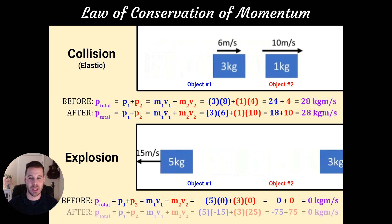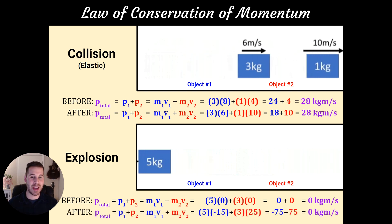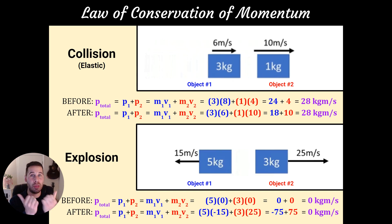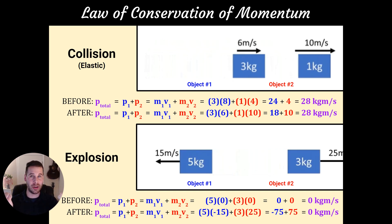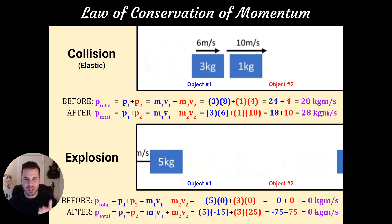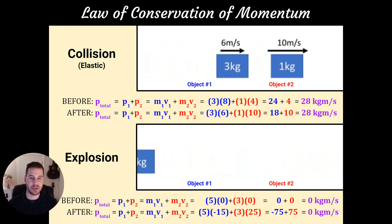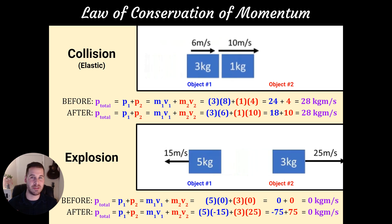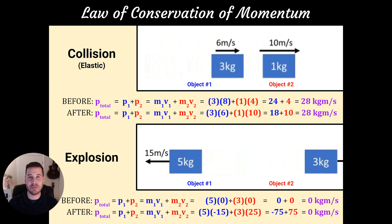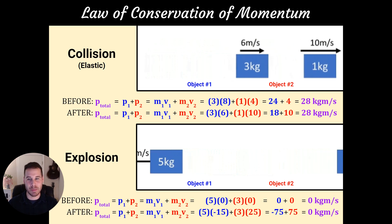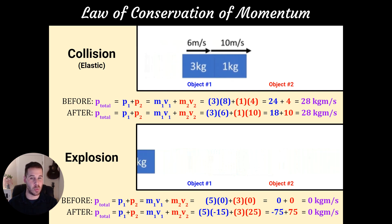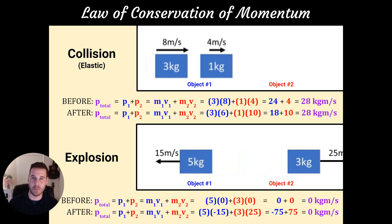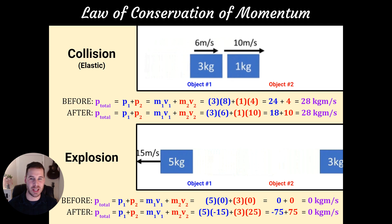What about after when they are moving? Well, things get a little bit interesting because now we have an object moving to the left and an object moving to the right. Those directions oppose one another, and we have to account for that in the math. So you'll see at the bottom there, the masses are still the same in our second calculation, but the velocities have changed. So instead of zeros, now we have negative 15 meters per second being plugged in for the velocity of object one and positive 25 being plugged in for the velocity of object two. So why the negative on the 15?